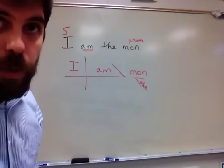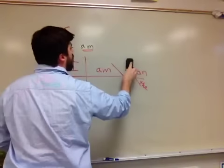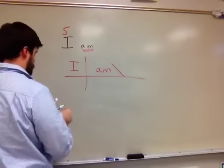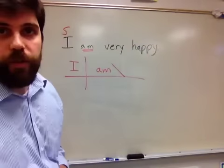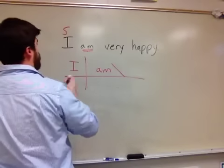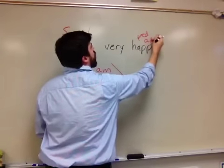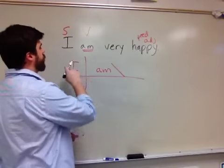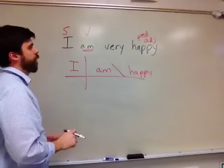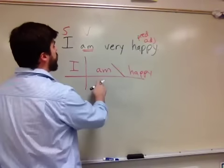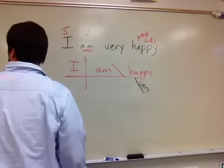Let's try one with a predicate adjective: I am very happy. 'I' is the subject, 'am' is the verb, and 'happy' is the predicate adjective. Put the baseline — I am — and 'happy' goes after the slanty line. Where does 'very' go? It doesn't modify 'am' — it modifies 'happy.' How happy? Very happy. So 'very' gets a slanty line dangling off of 'happy.'